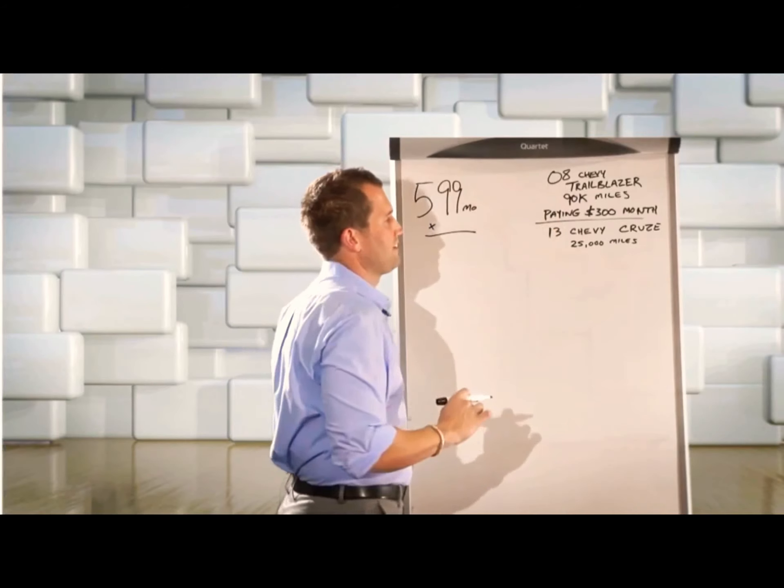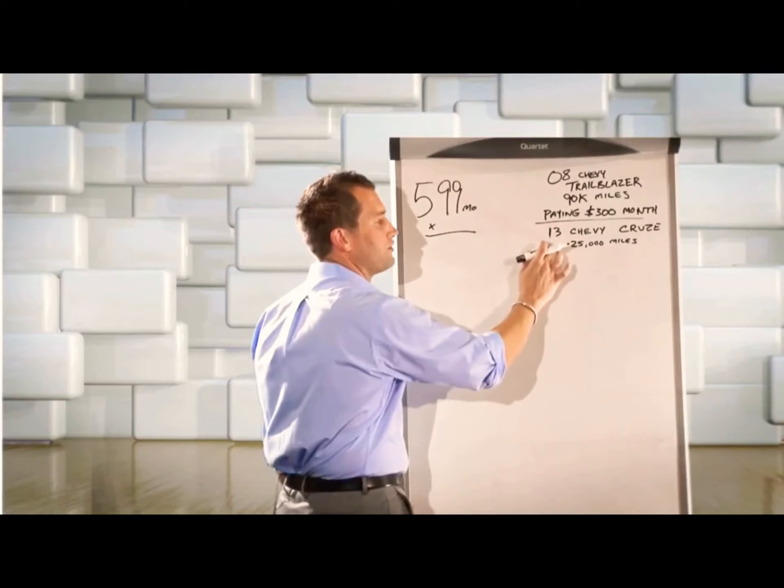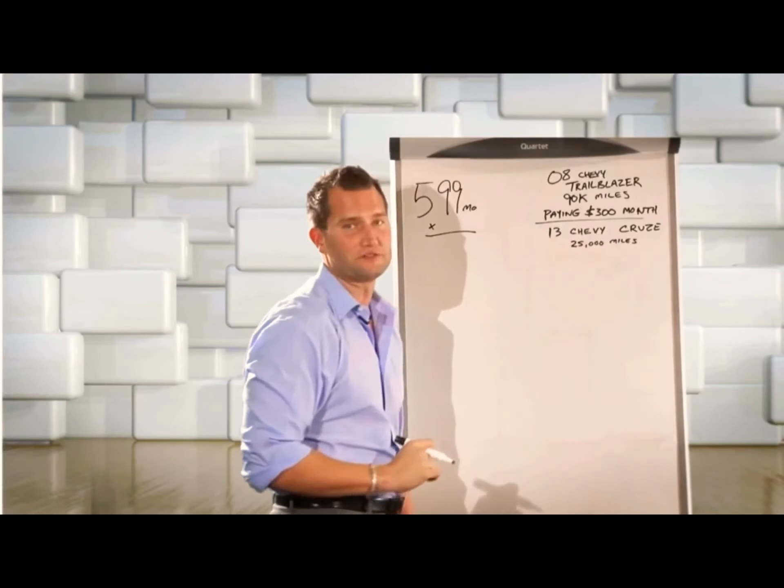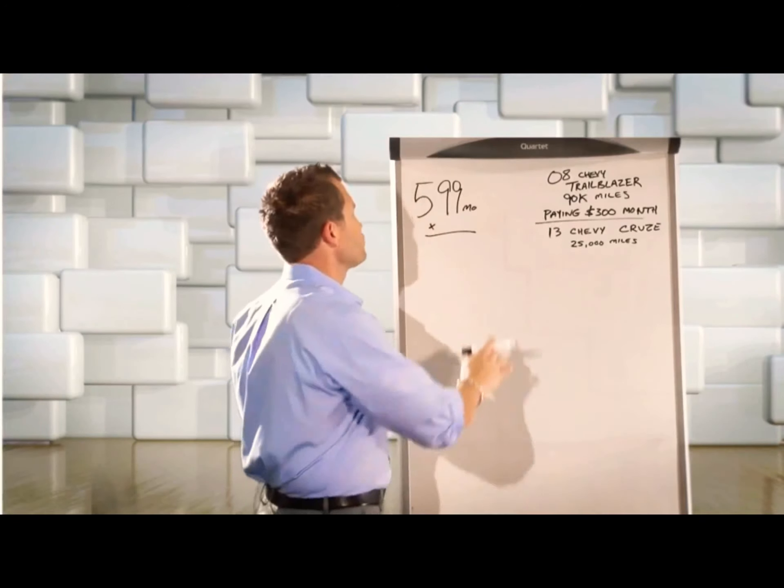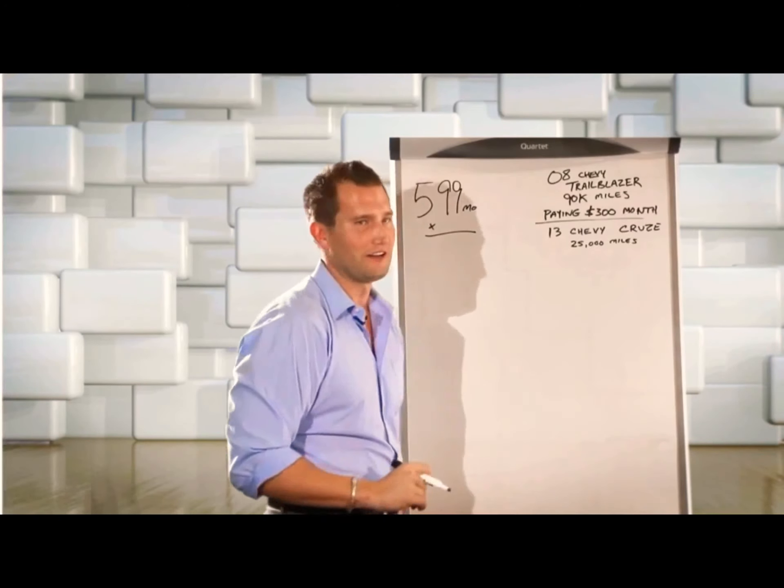So basically what we have here, a customer is trading an 08 Chevy Trailblazer, 90,000 miles, currently paying $300 a month. They're buying a 2013 Chevy Cruze, 25,000 miles. The manager has put out a proposal at $599 a month. Now $599 a month is where we make all the money. We do not want to negotiate down.